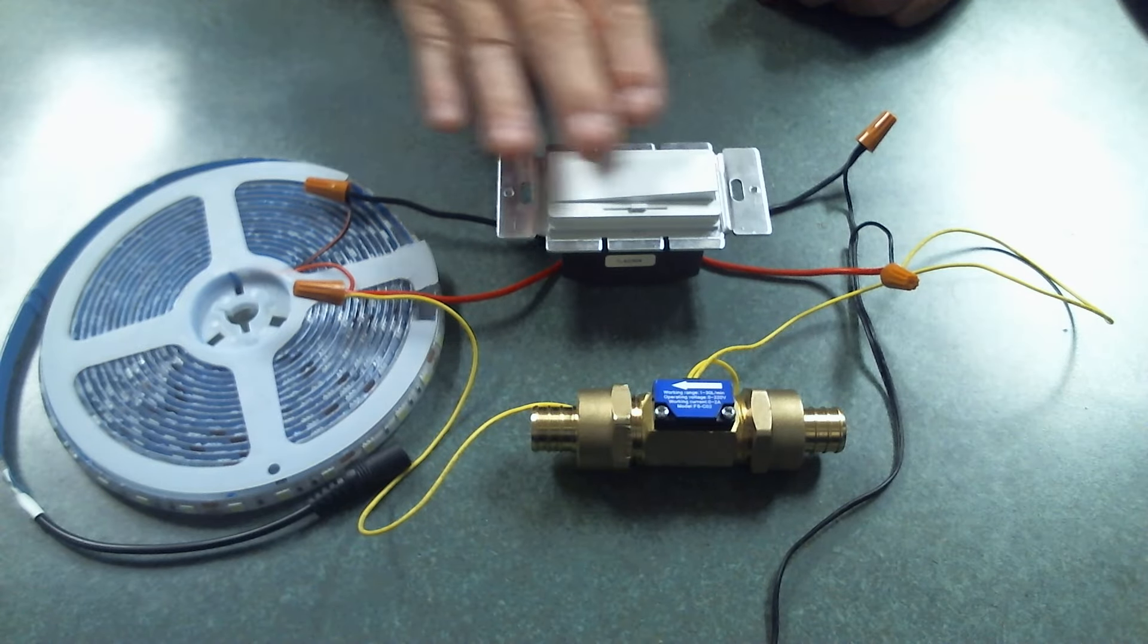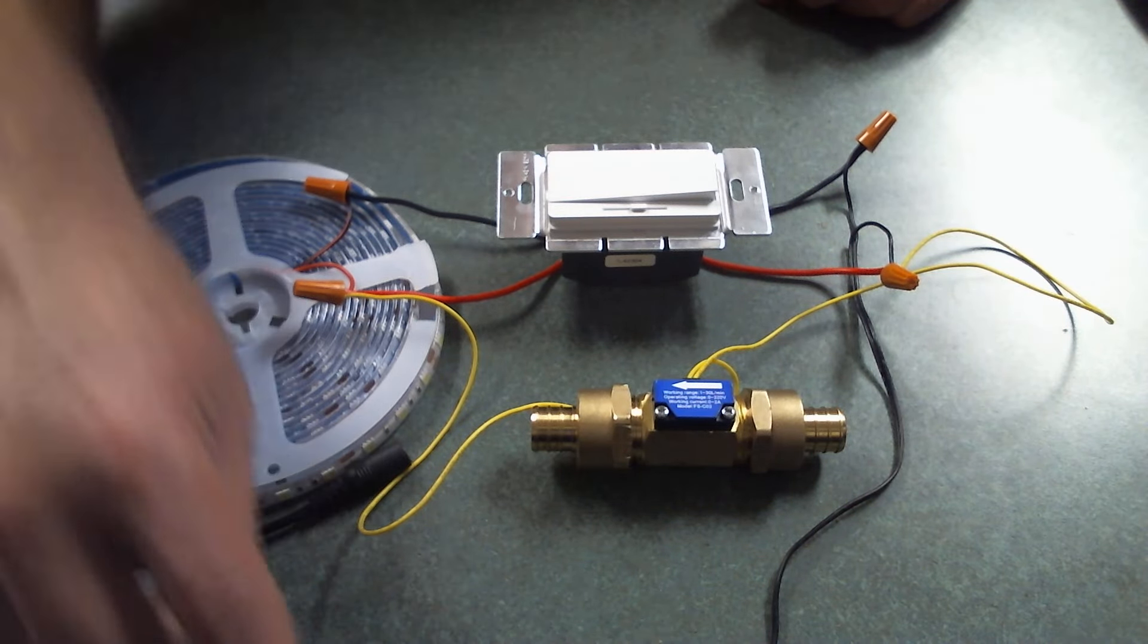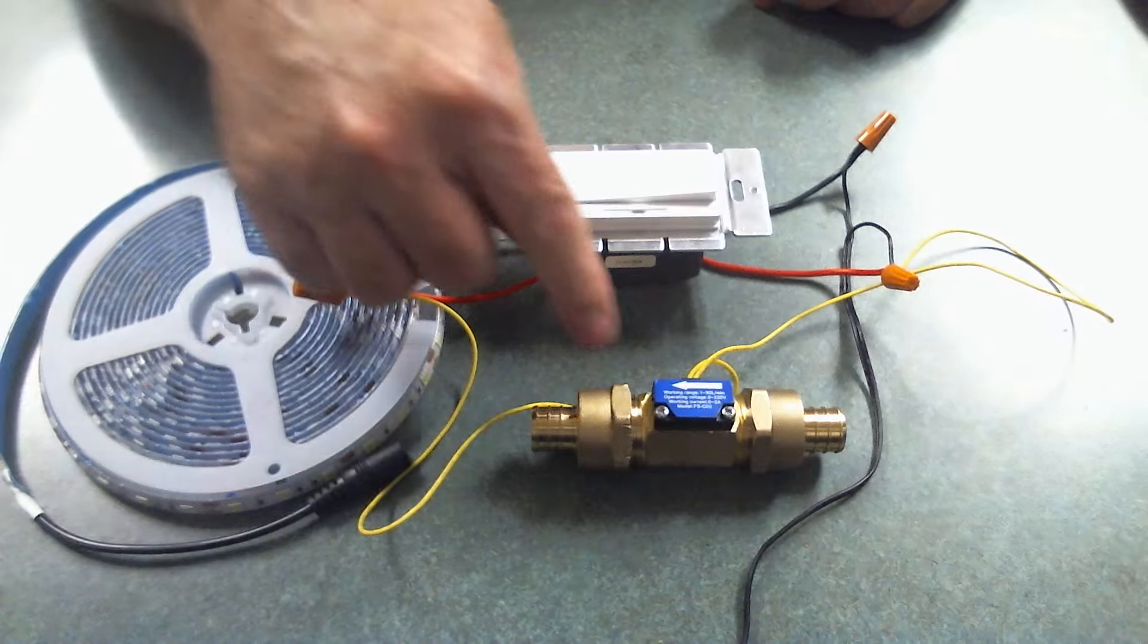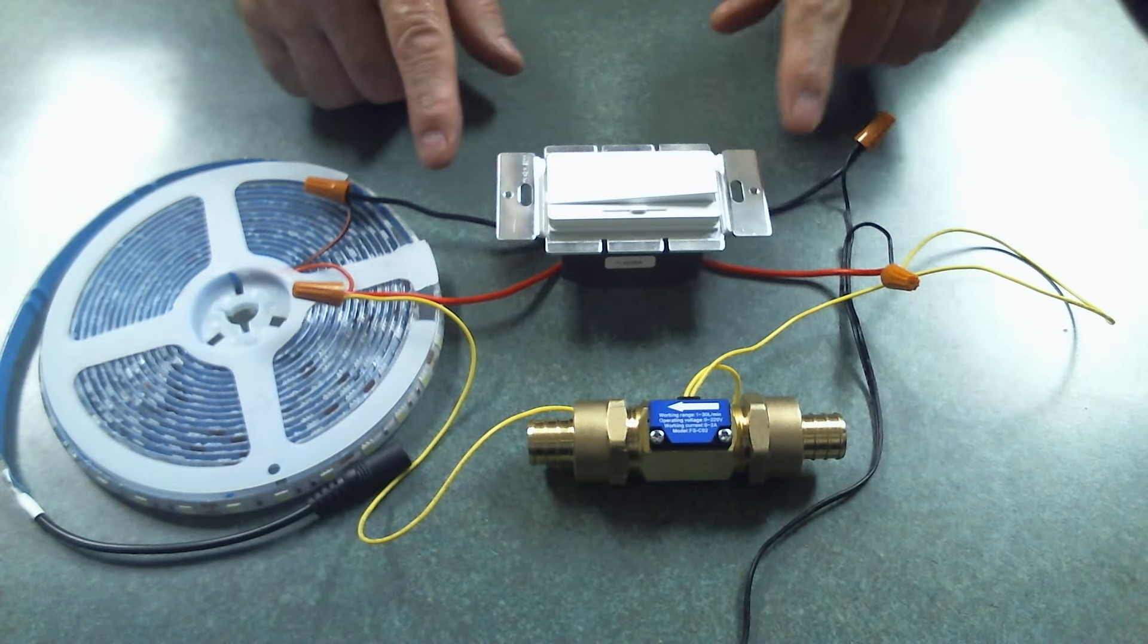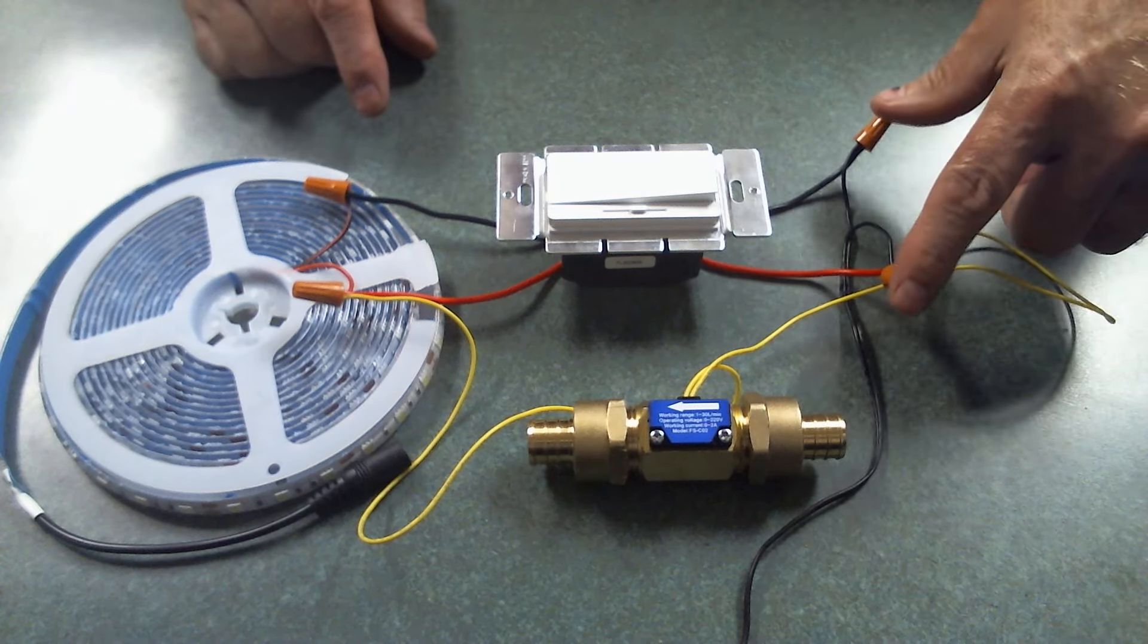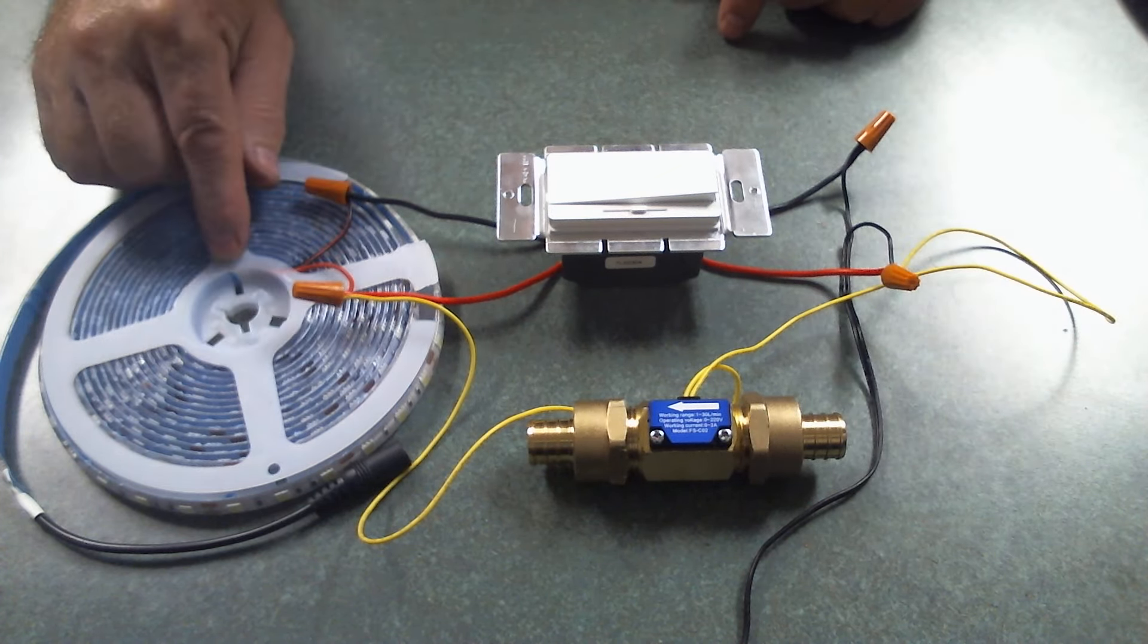Whenever the dimmer switch turns on the lights come on. We have our 12-volt power supply coming in. We have this hooked to the positive side. We have the switch, it's a PWM switch. It comes in from our power here and out to our LEDs here.